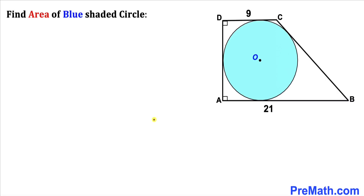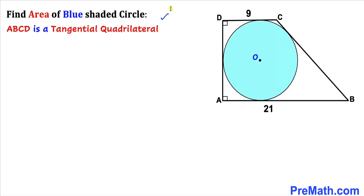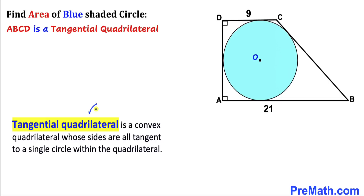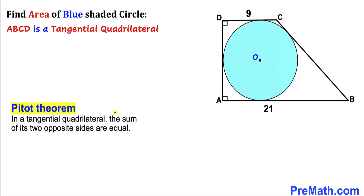Let's get started with the solution. Focusing on quadrilateral ABCD, we call this kind of quadrilateral a tangential quadrilateral. The definition is: a quadrilateral whose sides are all tangent to a single circle within that quadrilateral — as you can see in this diagram, where all of its sides are tangent to the very same circle. Now let's recall the Pitot theorem.